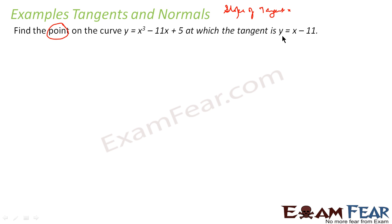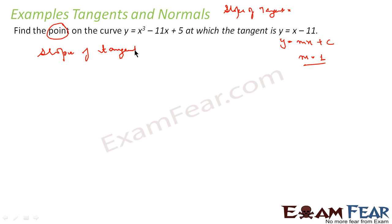Here also the equation of the tangent is given. An equation of a tangent is nothing but y = mx + c form, and if you compare these two, my slope of tangent is nothing but 1. So by comparing these two I can find slope of tangent is 1. Half the battle is won — I know the slope of tangent, so I can find the points. The slope of tangent is dy/dx at x = x₀, and this equals 1.